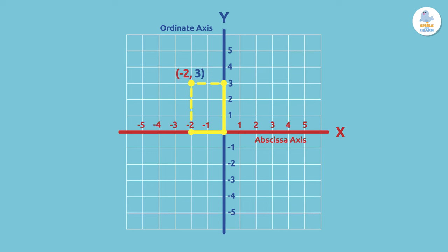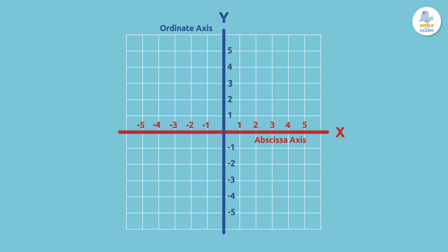Where would the point (3, 2) be? Let's count three on the x-axis: one, two, three. And now let's count two on the y-axis: one, two. Great! Now we just need to see where they intersect. Here we have the point (3, 2). Well done!